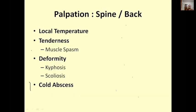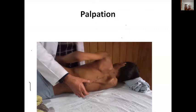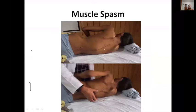After inspection we move to palpation, starting with local temperature and tenderness, then assessing deformity — kyphosis, scoliosis, or kyphoscoliosis. Check for direct tenderness by palpating the spinous process. In tuberculosis of the spine with paradiscal involvement, give an indirect push from one side of the spinous process, rotating it, to elicit pain from the anterior part of the spine. A muscle spasm may appear at the time of eliciting tenderness — this can occur in active tuberculosis.